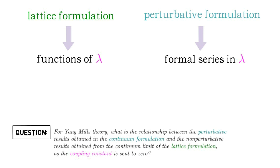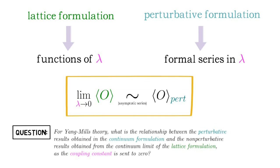For Yang-Mills theory, what is the relationship between the perturbative results obtained in the continuum formulation and the non-perturbative results obtained from the continuum limit of the lattice formulation as the coupling constant is sent to zero? More precisely, since Feynman diagrams are to serve as a series approximation, given some observable O, do perturbative expectation values provide an asymptotic series for the exact expectations obtained from the lattice in the continuum limit as λ goes to zero?